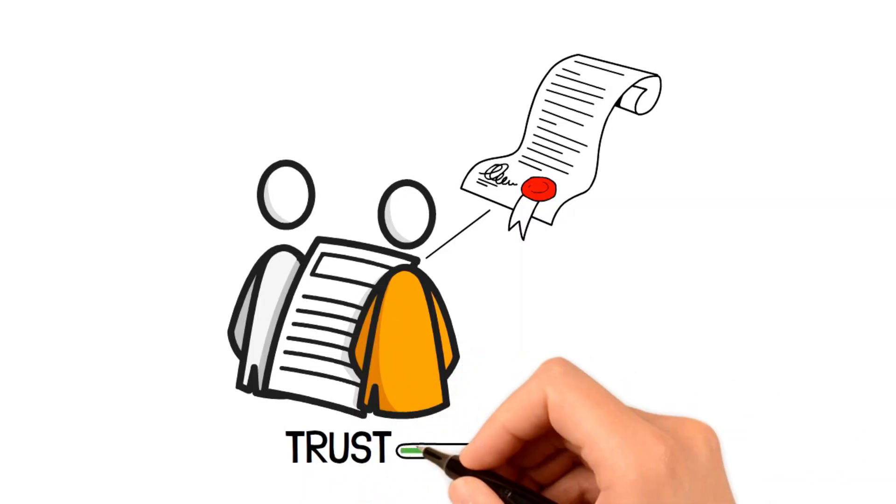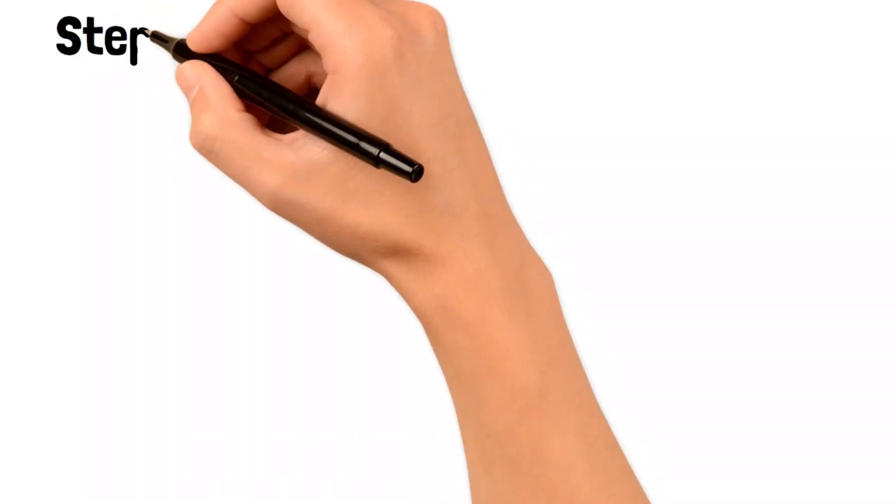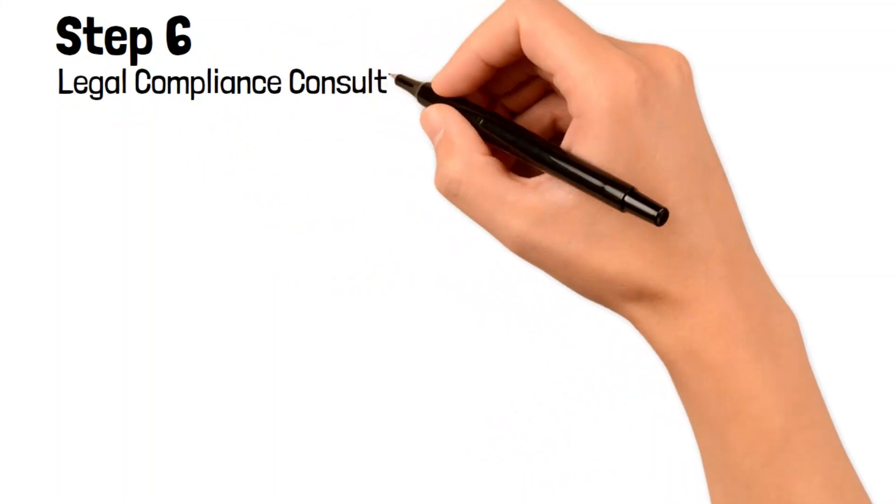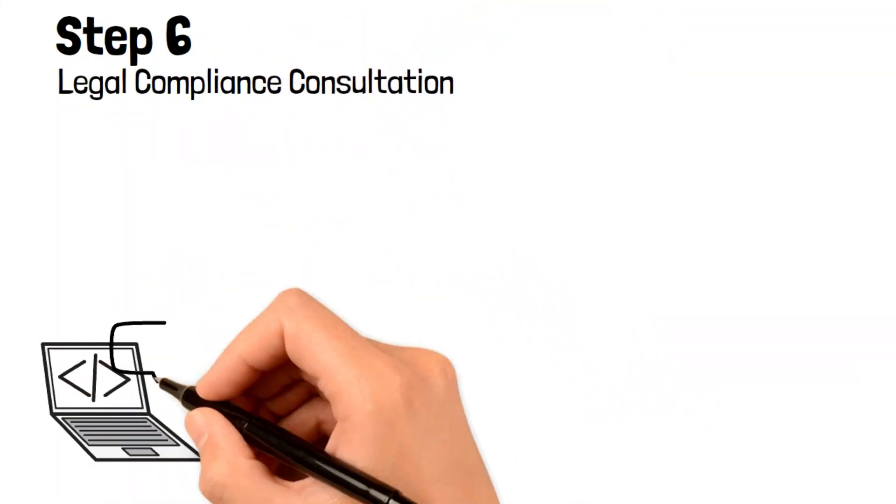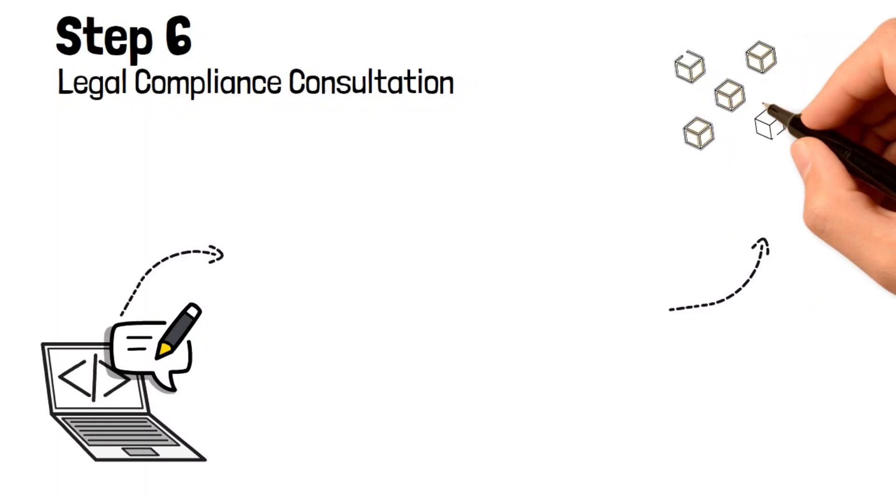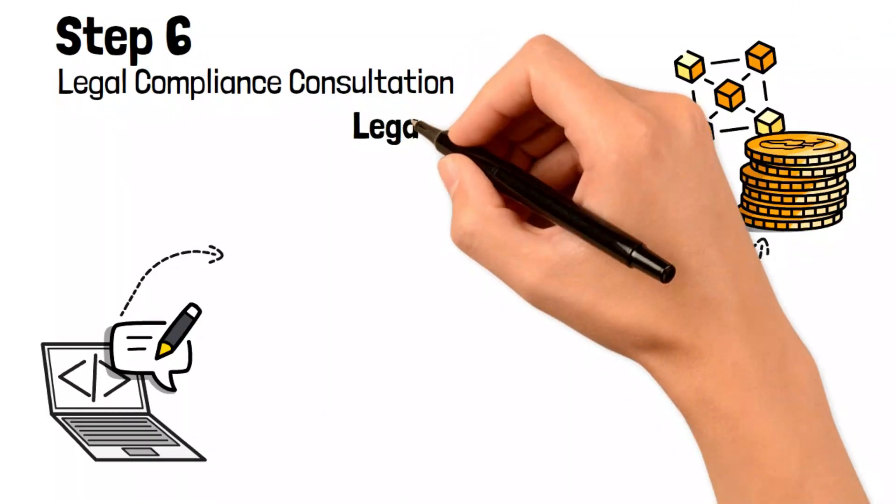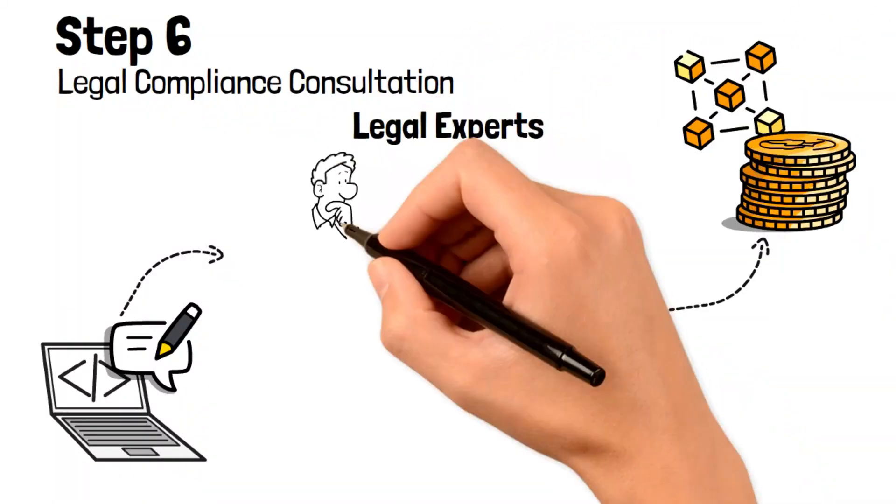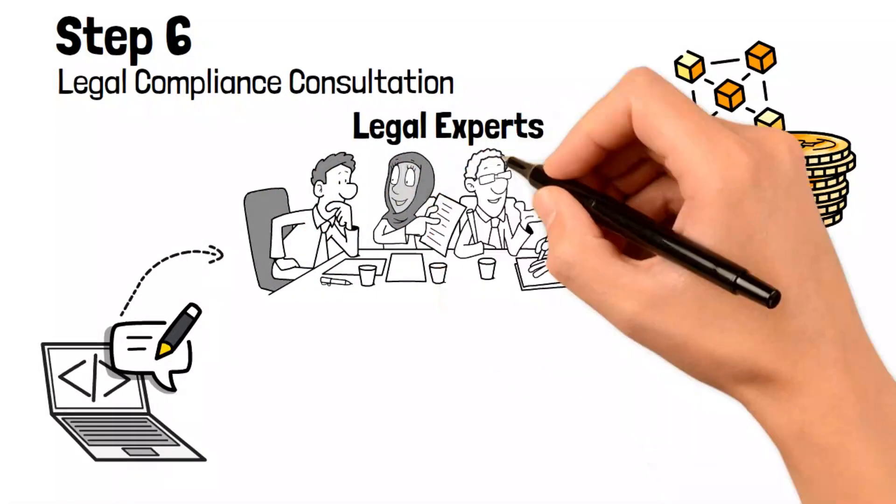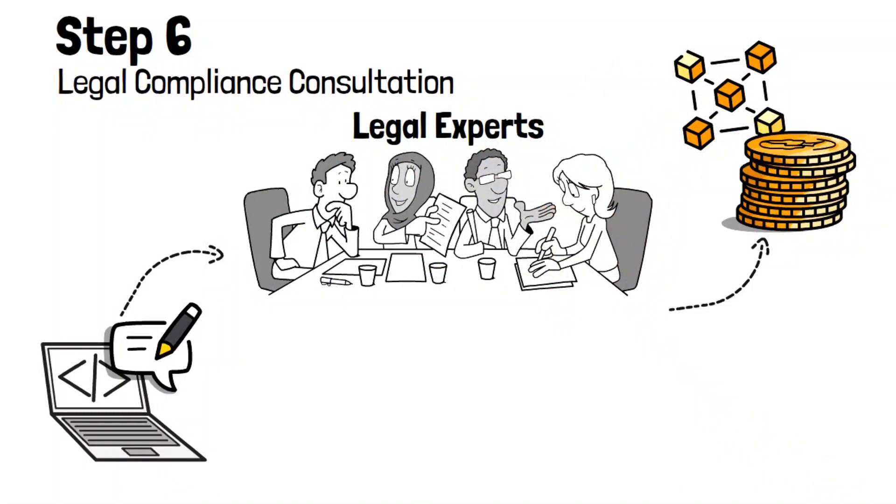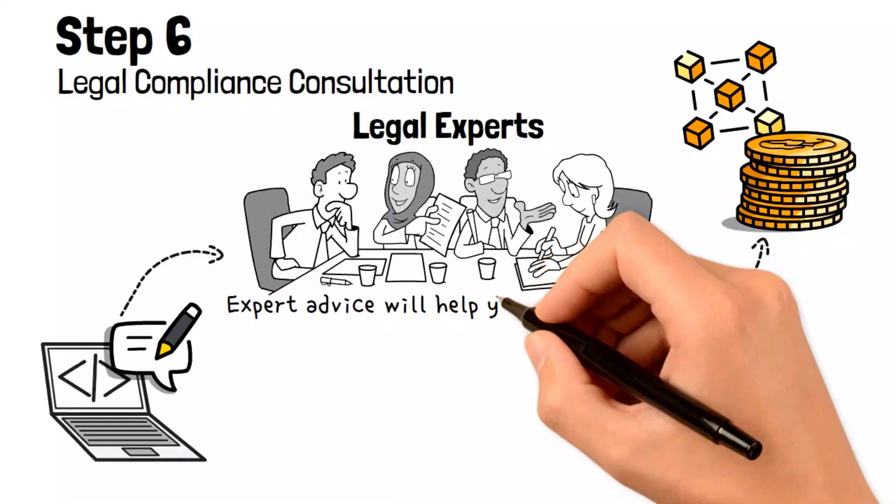Step Six: Legal compliance consultation. Before you go ahead and launch your cryptocurrency on the blockchain, it's crucial to consult with legal experts to ensure you're complying with all necessary regulations. Seeking outside help is essential as this process can be complicated, and expert advice will help you determine if you need any permissions or approvals before proceeding.